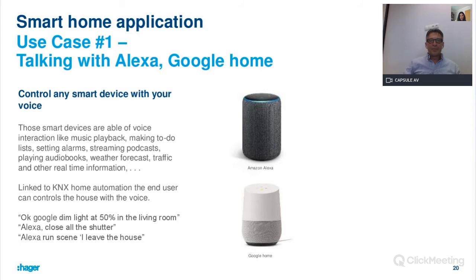Use case number one: voice trigger IoT, like Google Home or Alexa from Amazon. As a standalone product, the question you ask is the trigger and the answer you get is the action — for example, 'Alexa, what's the weather like in Paris?' or 'Google, wake me up at 7am.' Linked to KNX home automation it becomes more interesting: the end user can control the house with voice, such as 'Google, dim the light to 15% in the living room,' 'Alexa, open all the shutters,' or 'Alexa, run the scene I leave the house.'